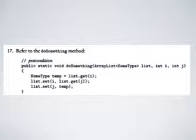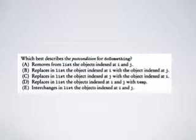So we use a temporary variable to store the original content of index i. Then we assign index i with the content of index j. And we assign index j back to the original temporary storage value. That means, with the help of this temporary variable called temp, we can do an exchange of the content at index i and the content at index j inside of this list. So, which best describes the post condition for the doSomething method?